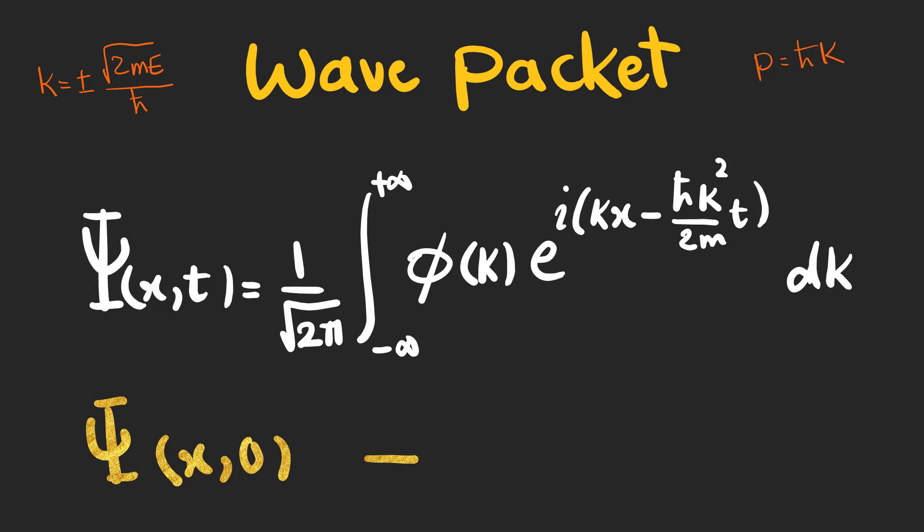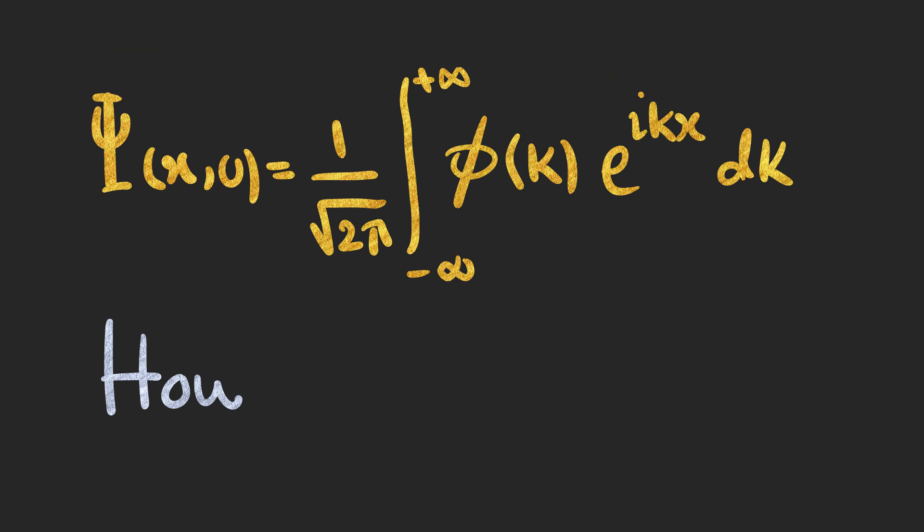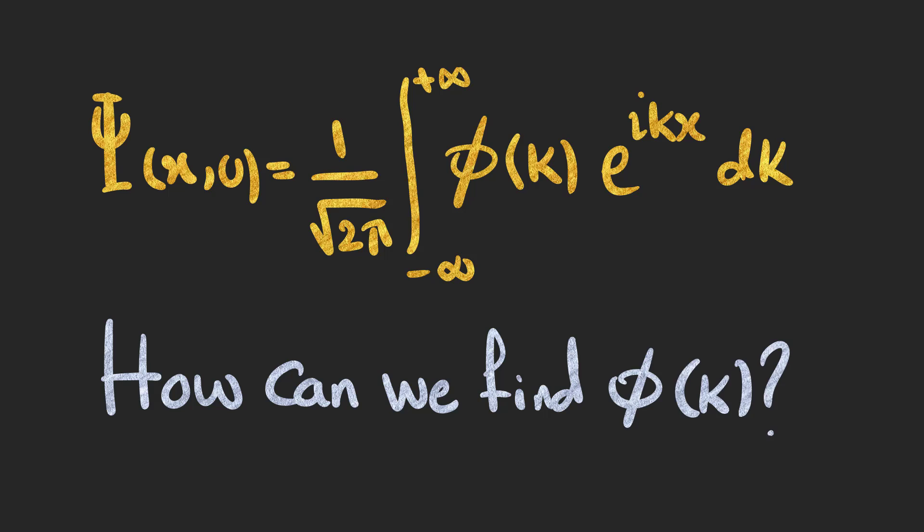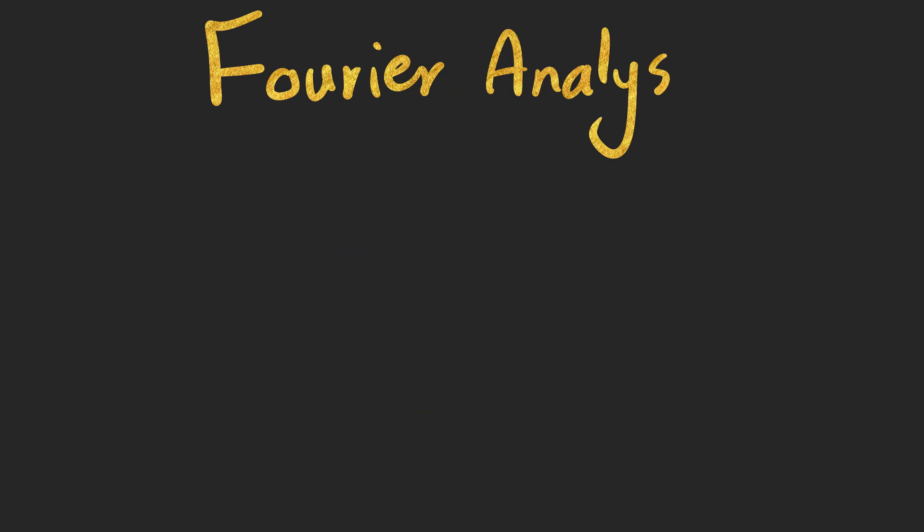We are usually given the wave function at time 0, and we are asked to find it at time t. Suppose that we have the wave function at time 0. How can we find phi of k? The answer is Fourier analysis.